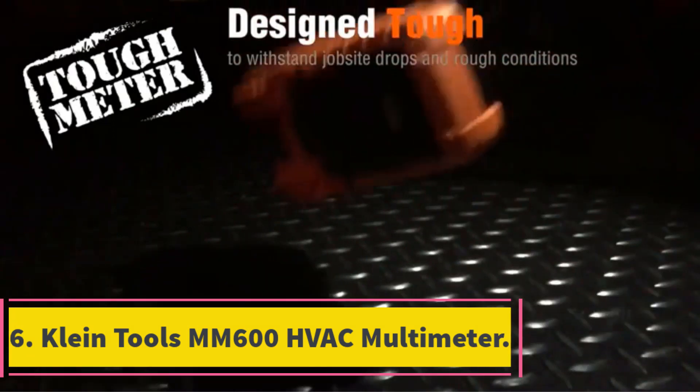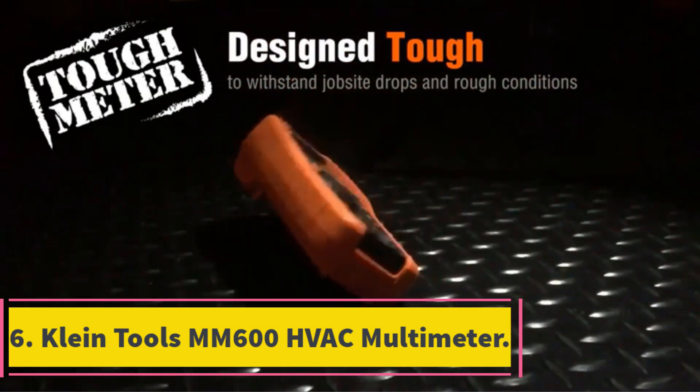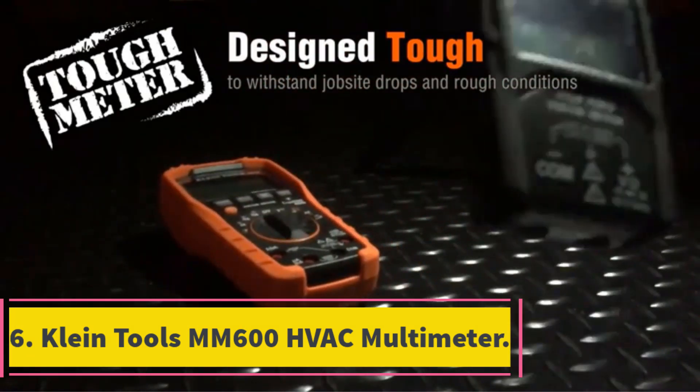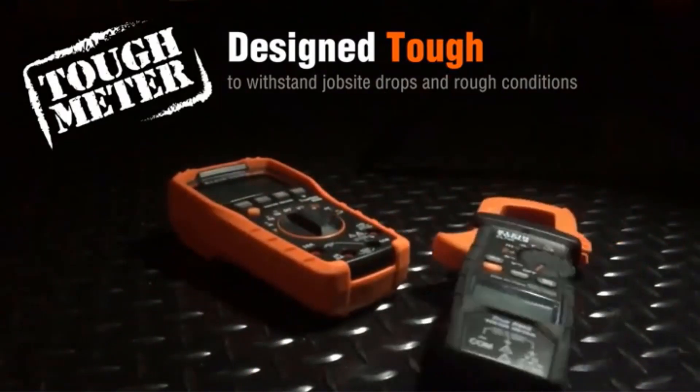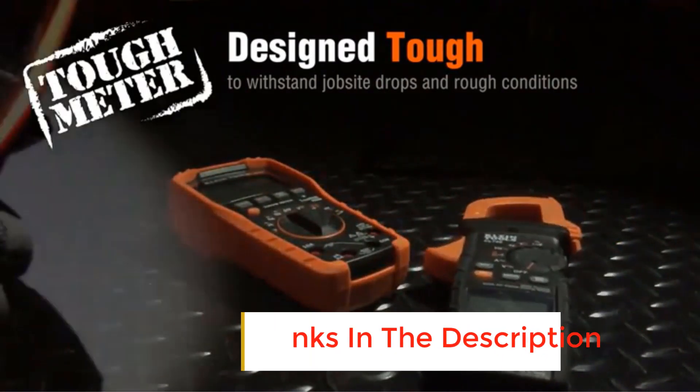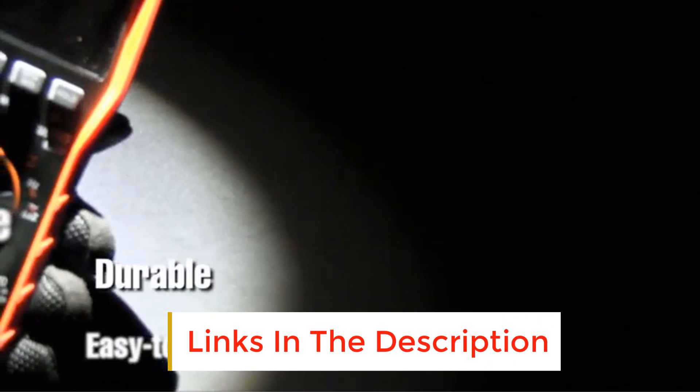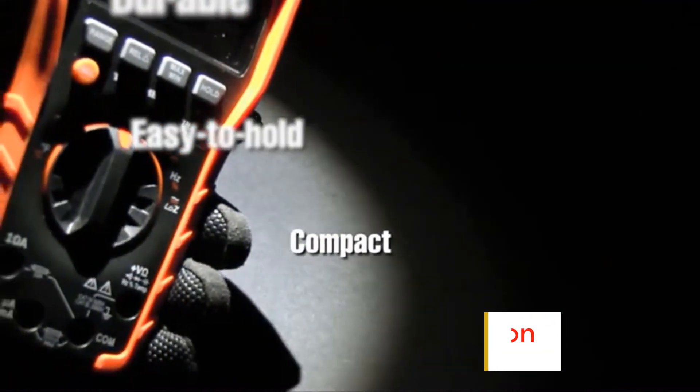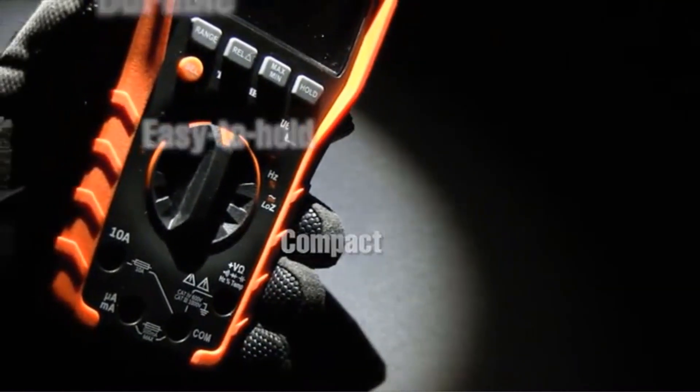Number 6. Klein Tools MM600 600V AC Multimeter. Designed with durability in mind, Klein Tools MM600 600V AC Multimeter is built to sustain a 6.6-foot drop and put up with any jostling around that your toolbox or job site might require.